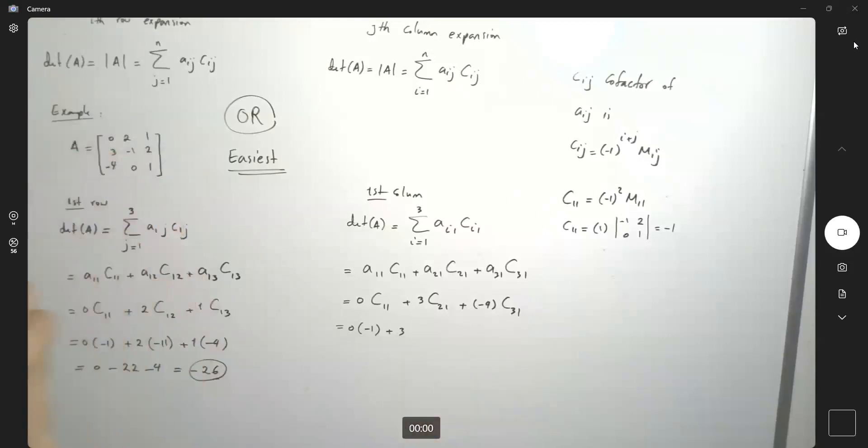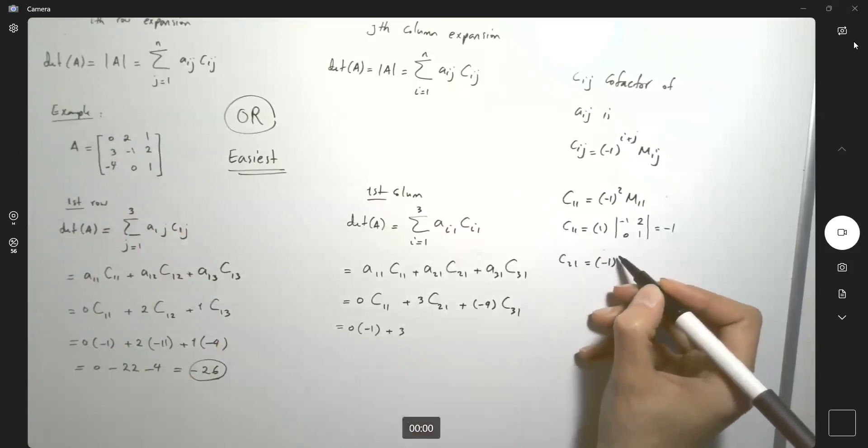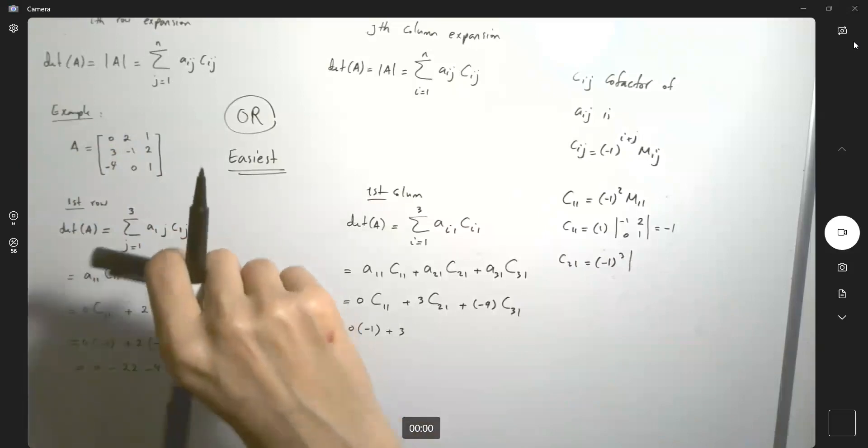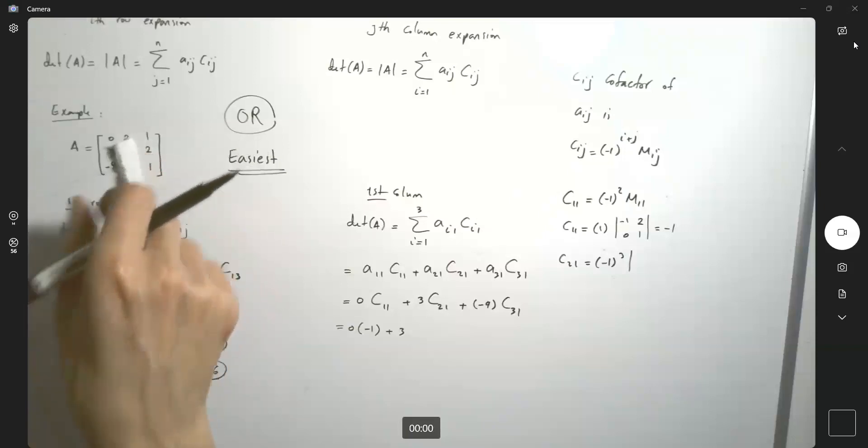C2,1 is (-1)^3 times M2,1. So here, let me see if I have something a little bit more narrow. M2,1: we are eliminating these guys.